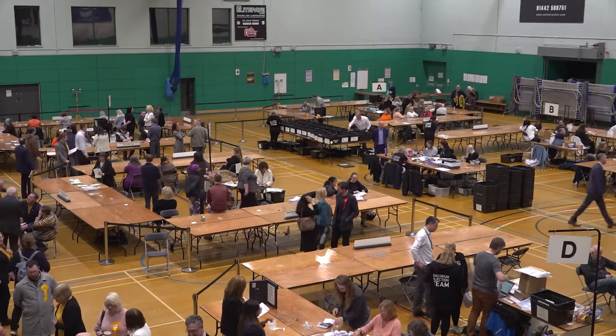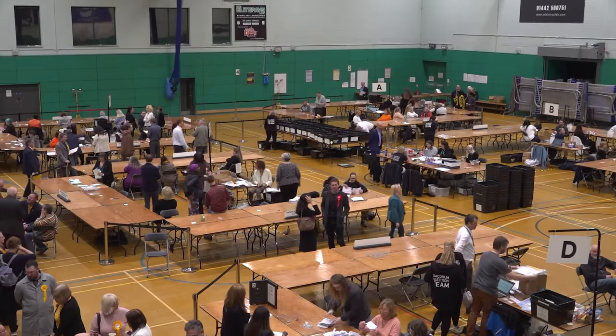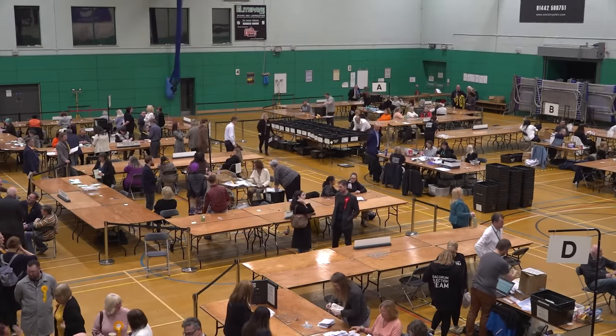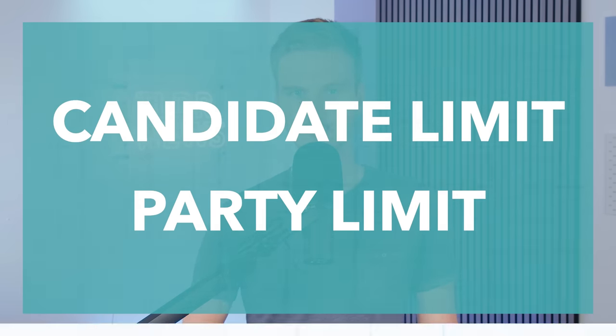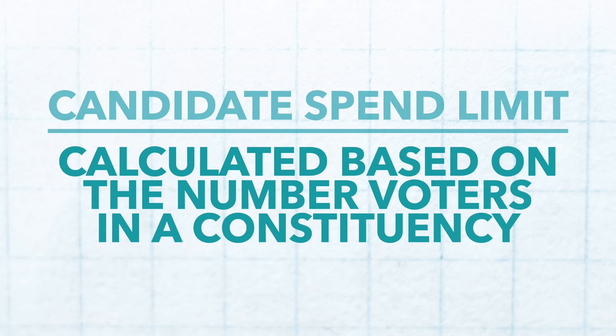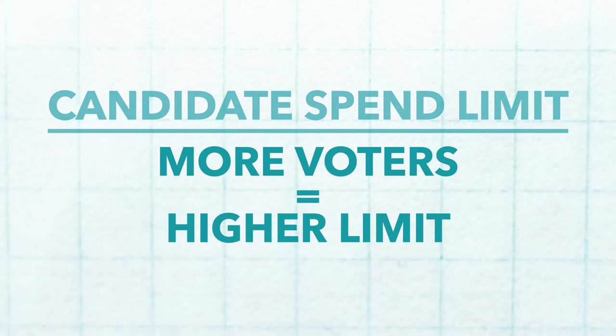Before we dig into the finances of the main parties, let's start by looking at why this is important. Here in the UK, all main political parties are subject to pretty strict campaign finance rules. There are two kinds of spending limits: one for candidates and one for parties. The candidate limit depends on how many voters are in a given constituency — the more voters, the higher the limit. The party limit relates to any spending used to promote the party generally, rather than promoting a specific candidate.